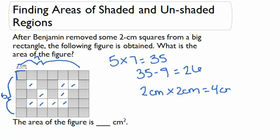If we have 26 squares and we want to multiply that by 4 cm squared for each, that's going to give us 104 cm squared. So the area of the figure is 104 cm squared.